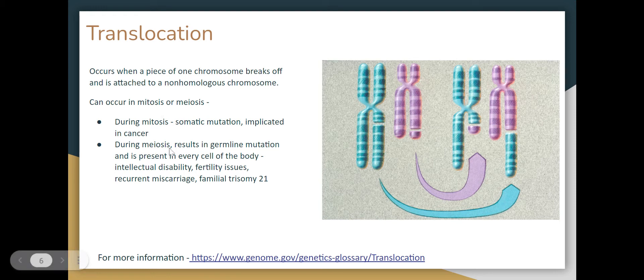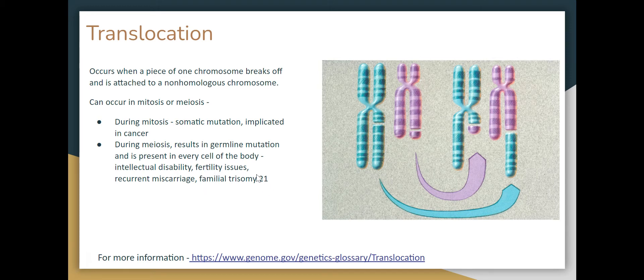During meiosis, we have a germline mutation that is present in every cell of the body. This can lead to different complications, the biggest of which is fertility issues — especially recurrent miscarriage, stillbirth, and familial trisomies. That will make sense in a little bit.